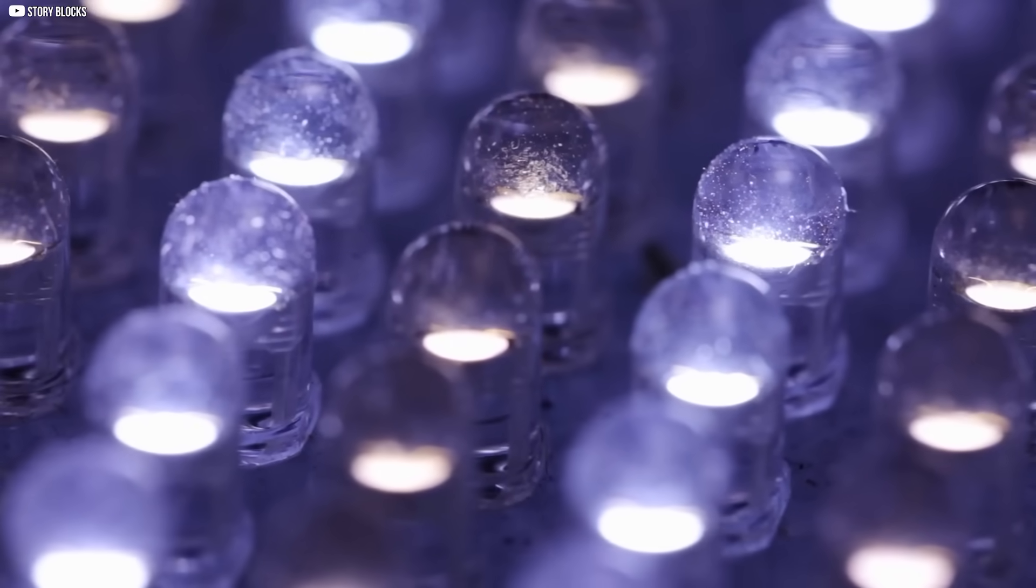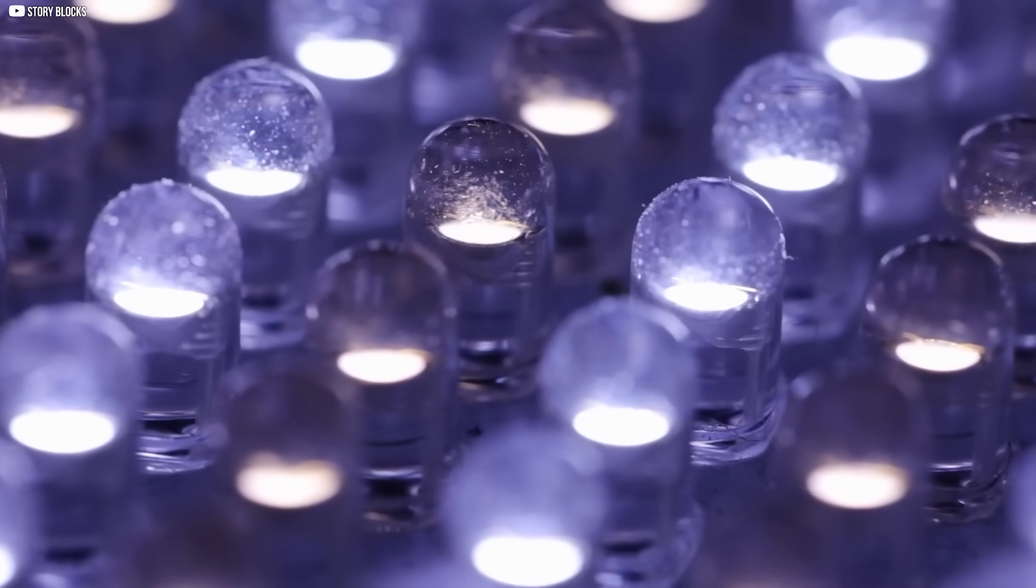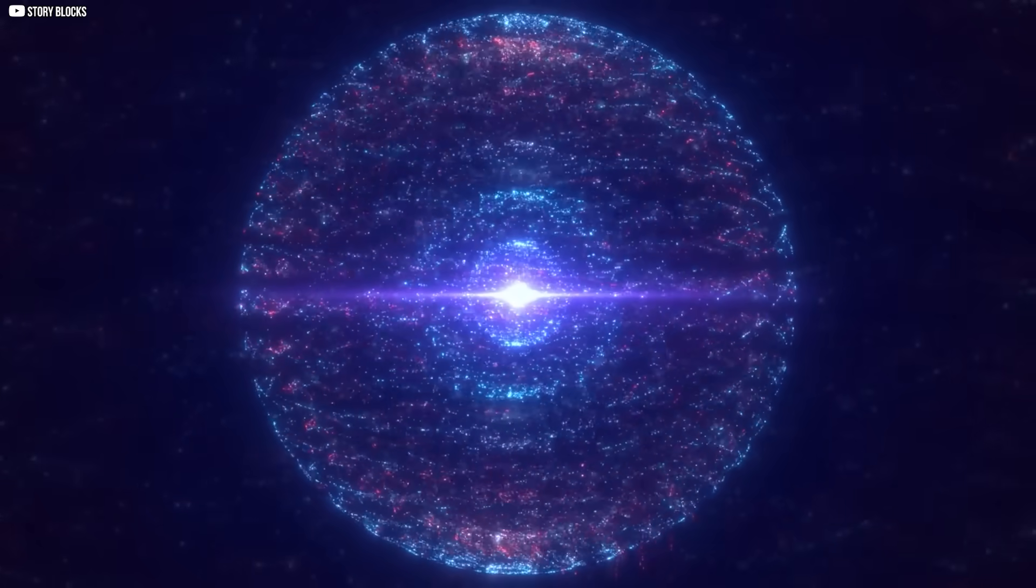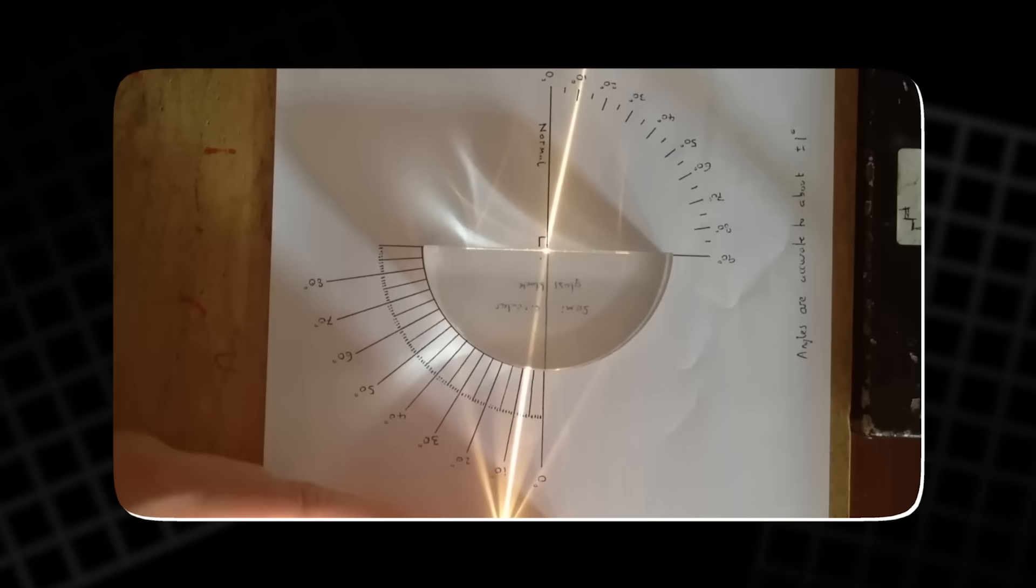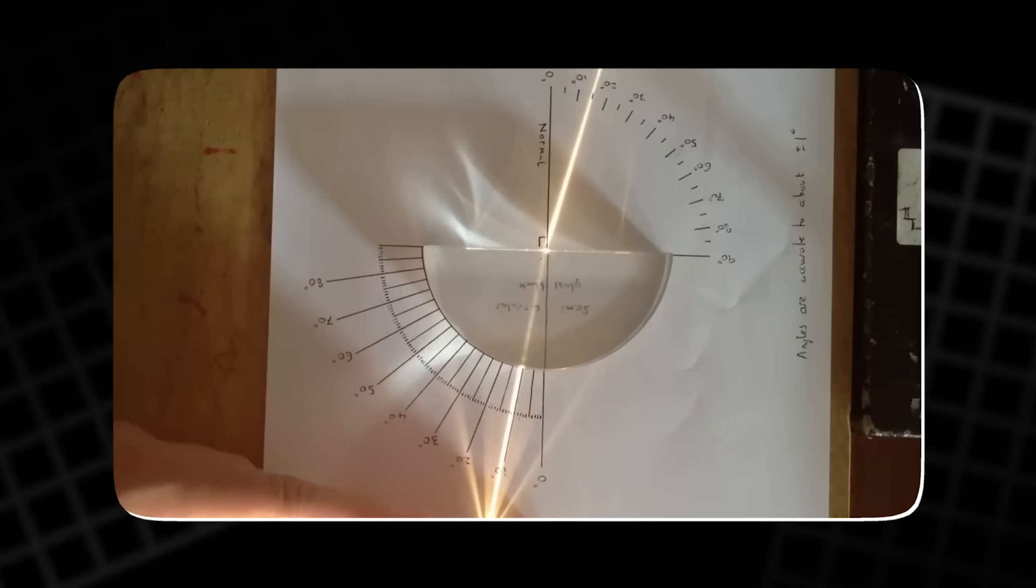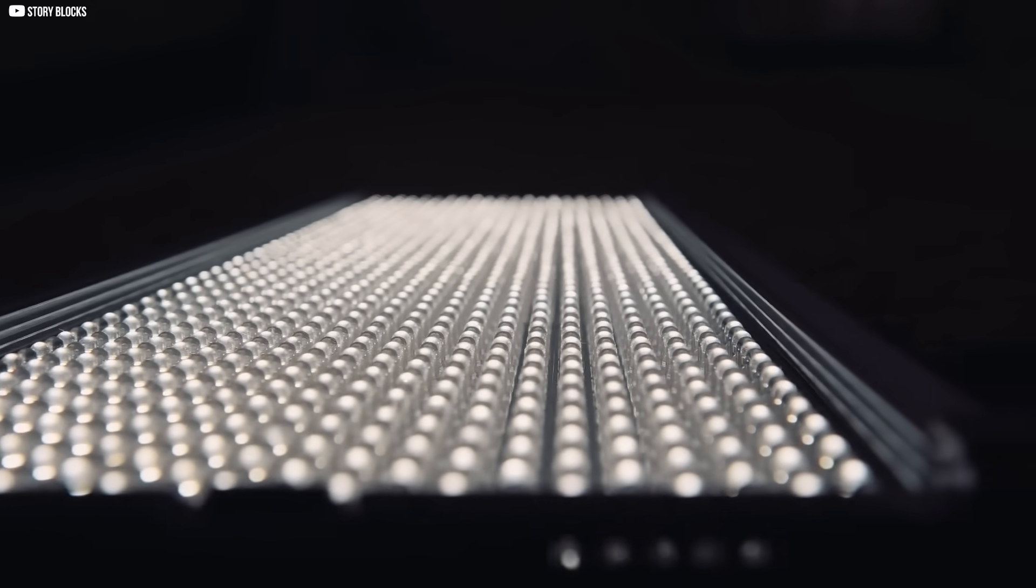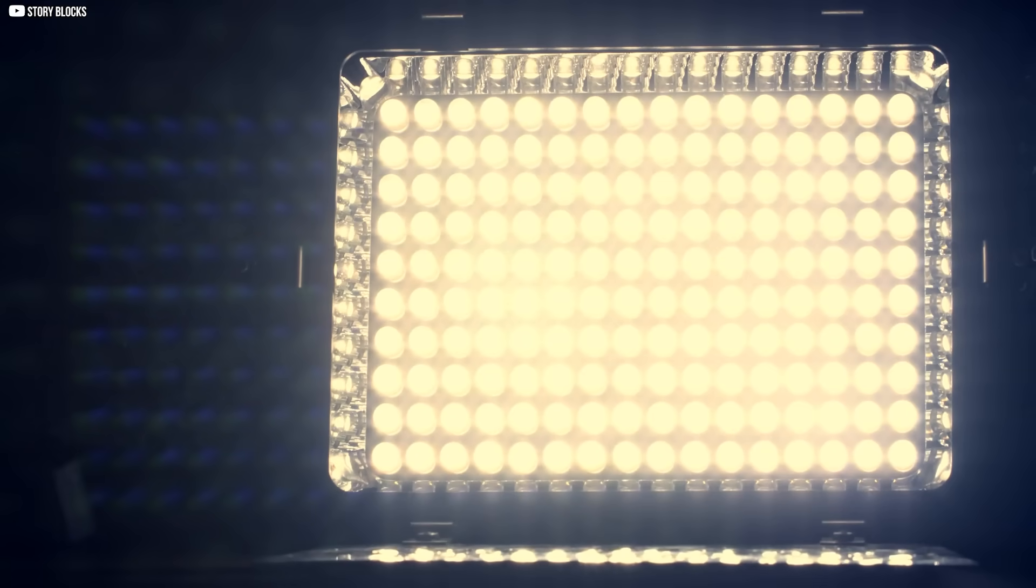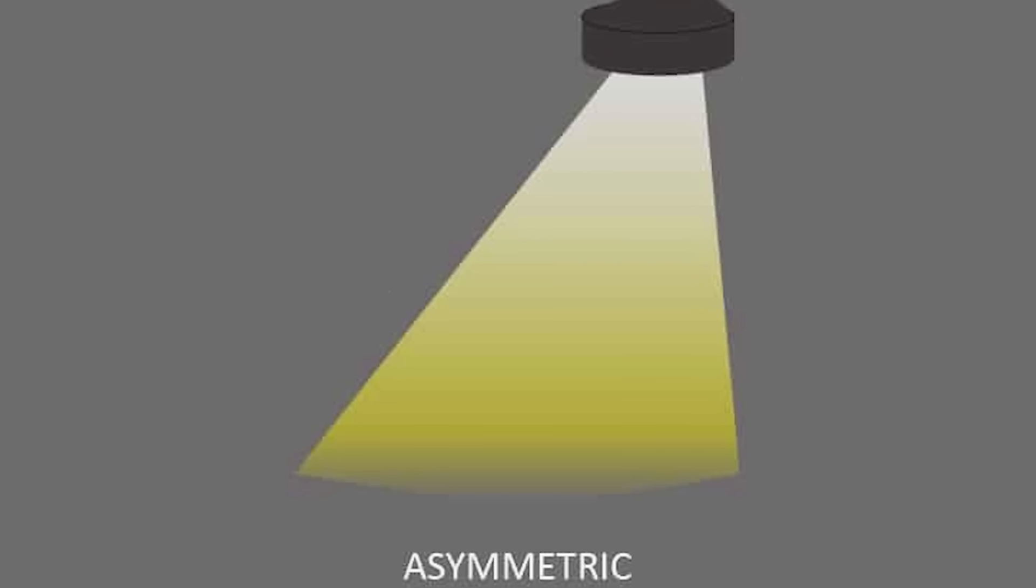In standard LEDs, flat surfaces and sharp material boundaries trap photons. When light hits these boundaries at steep angles, it reflects inward instead of shining out. This is known as total internal reflection, and it's one of the main reasons LEDs waste so much light. But asymmetrical surfaces break this trap. They scatter light in all directions, offering more exit paths.